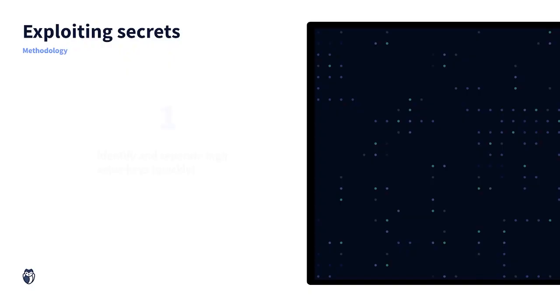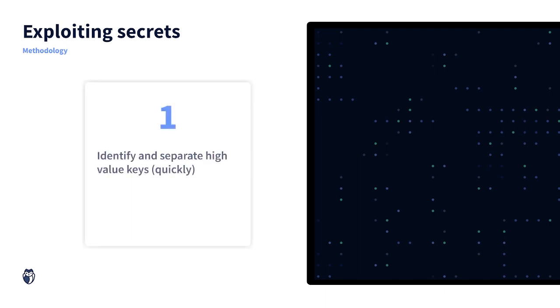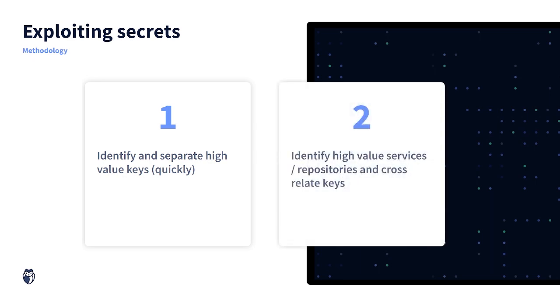How do we move into critical systems, elevate privileges, and launch our attack? Well, to start with, we'll definitely do two things. Number one, we're going to want to find the highest value keys and quickly. And number two, we're going to want to try and cross-relate those keys to find the services that they refer to. Like any attack, we're racing against the clock. We want to make sure that we can launch our attack before Twitch is even aware that we're inside their source code. So we want to identify the keys that are going to allow us to move laterally into different systems.